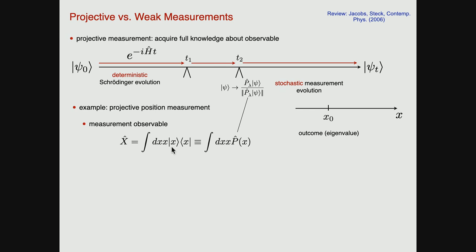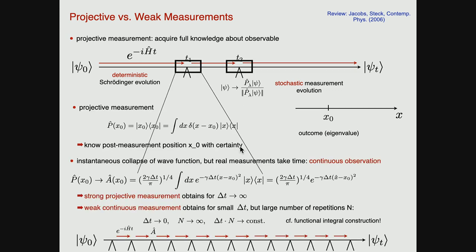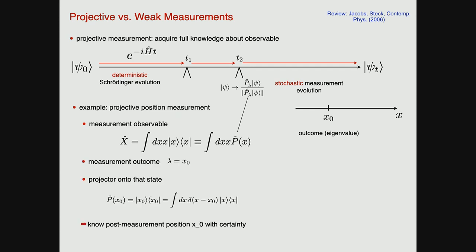Let's think about strong projective versus weak continuous measurements. Here is what a projective measurement is about — say of a continuous variable: we measure position X. This is the observable, in a continuum formulation of the spectral decomposition, where P is the projector onto position X. If I do a strong projective measurement, I will end up in a definite position X naught — somewhere I detect my particle. We can write the projector onto this state X naught by the aid of a delta function, telling us that the post-measurement position is X naught with certainty.